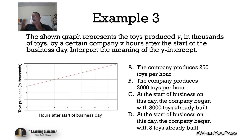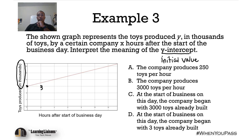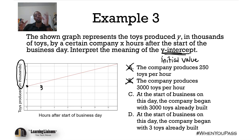Remember, in real-world context, the Y intercept represents your initial value. Looking at the starting value on the graph, that's at 3. But remember — this is in thousands. So we have 3,000. Answer A says the company produces 250 toys per hour — that's a rate, not an initial value. Answer B says the company produces 3,000 toys per hour — also a rate, not an initial value. Understanding what Y intercept means is crucial.